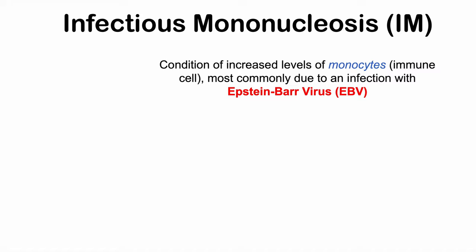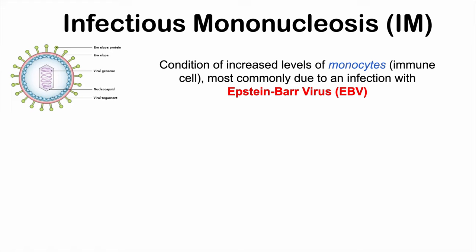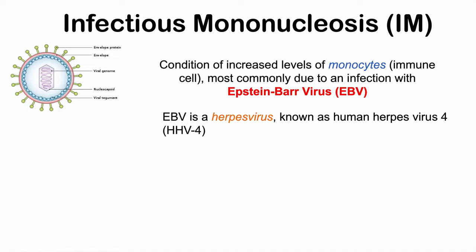Infectious mononucleosis, often referred to simply as mononucleosis, is a condition of increased levels of monocytes, which are an immune cell — a type of white blood cell. This condition is most commonly due to an infection with Epstein-Barr virus, or EBV. Epstein-Barr virus is a herpesvirus, also known as human herpesvirus 4, or HHV4.